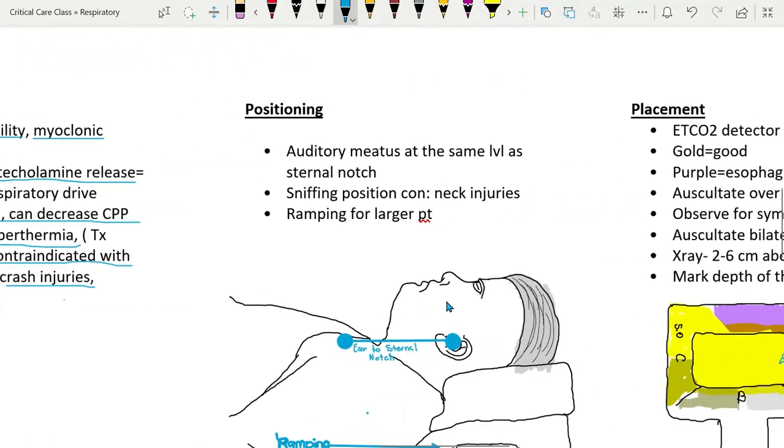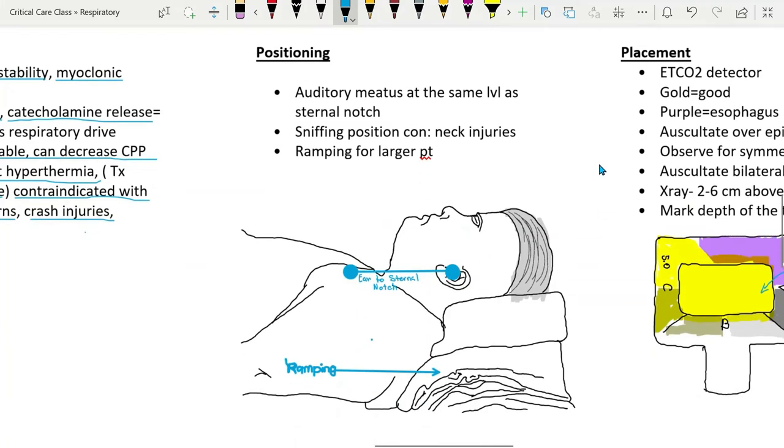Next is positioning. Usual position is what is referred to as sniffing position, with face parallel to the ceiling and with auditory meatus at the level of the sternal notch. Larger patients may require assistance of elevation of the head and the upper back, with blankets, to achieve desired position for intubation, which is called ramping. Laying just flat for larger patient would be ineffective position for intubation.